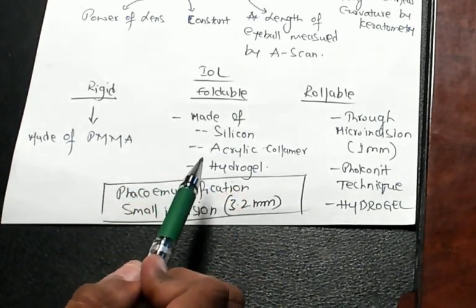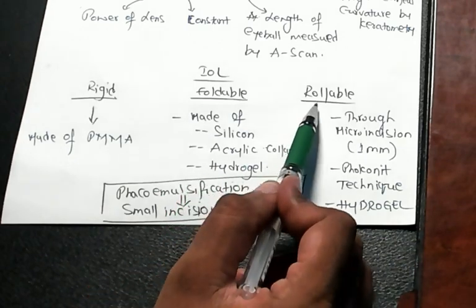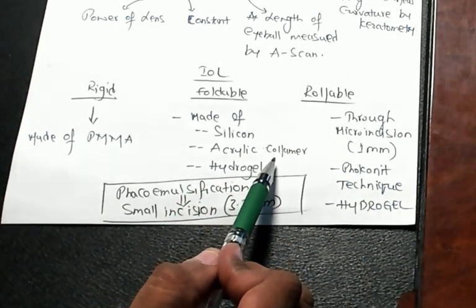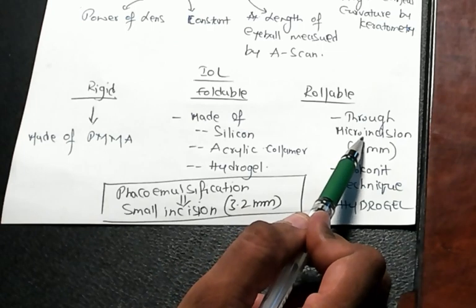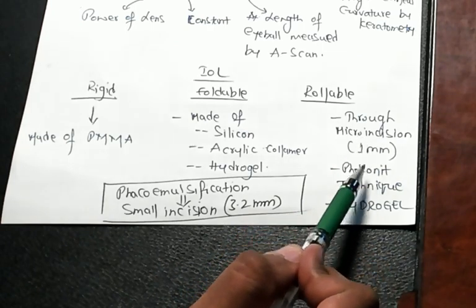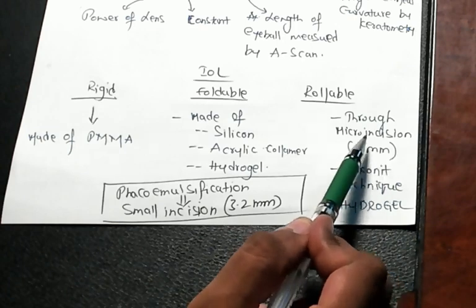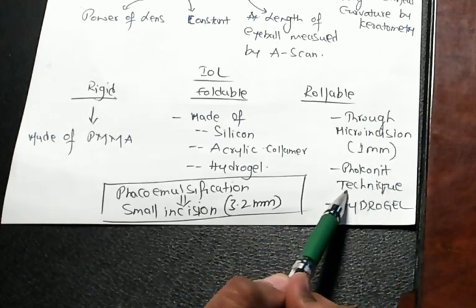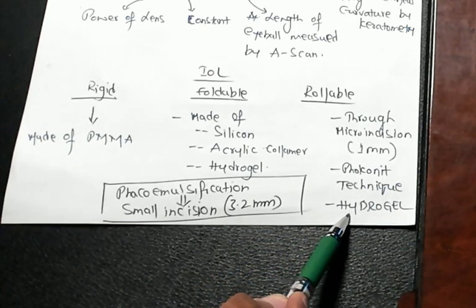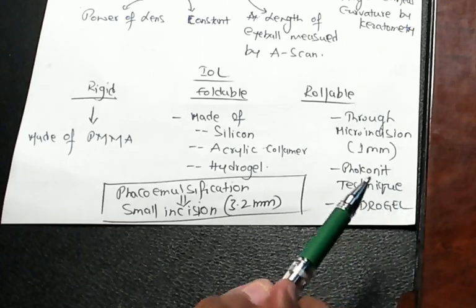What about the rollable IOL? Basically you will be making a micro incision. Micro means 1 millimeter micro. Through that you will put it, it's called phaco knit technique, and you use hydrogel. Hydrogel is the rollable is what you should remember.